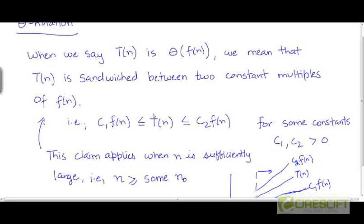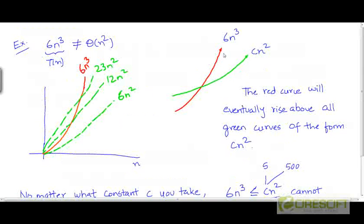We can never have a scenario where T is less than or equal to c₂ times n² for a fixed value of c₂, because 6n³ is eventually going to overtake every function of the form cn².